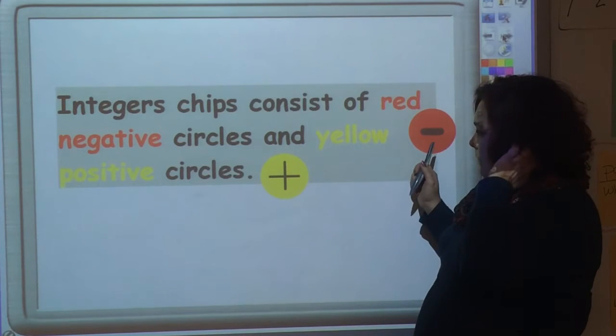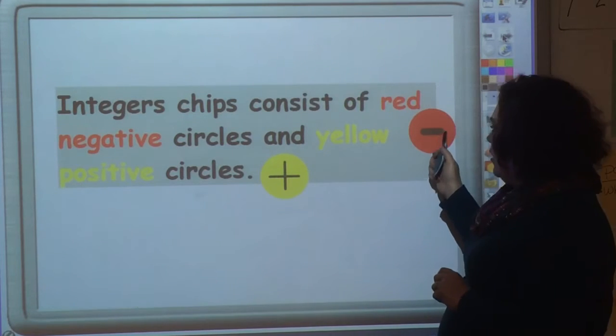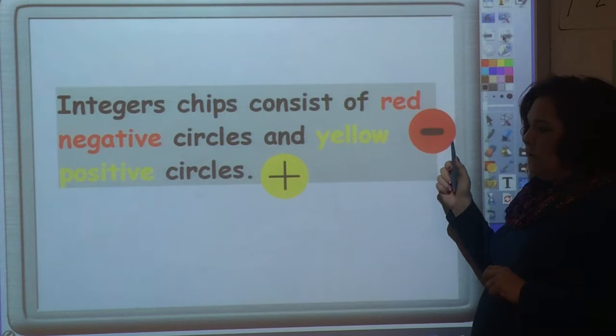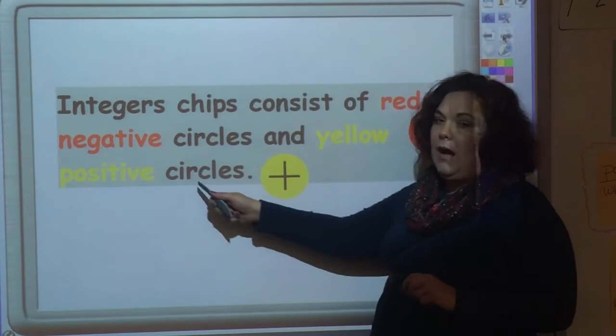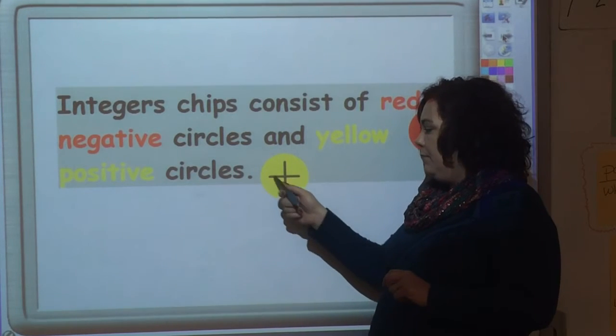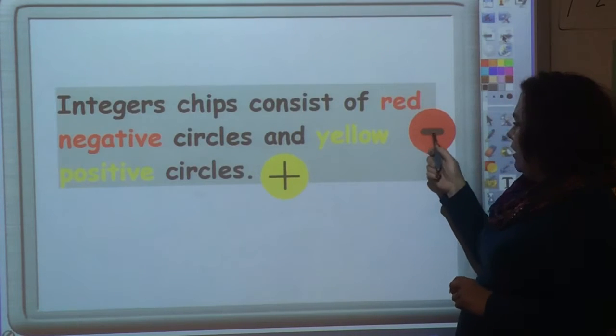So these are the integer chips. They consist of red, which are negative circles, and yellow, which are positive circles. These are a big plus and these are a minus.